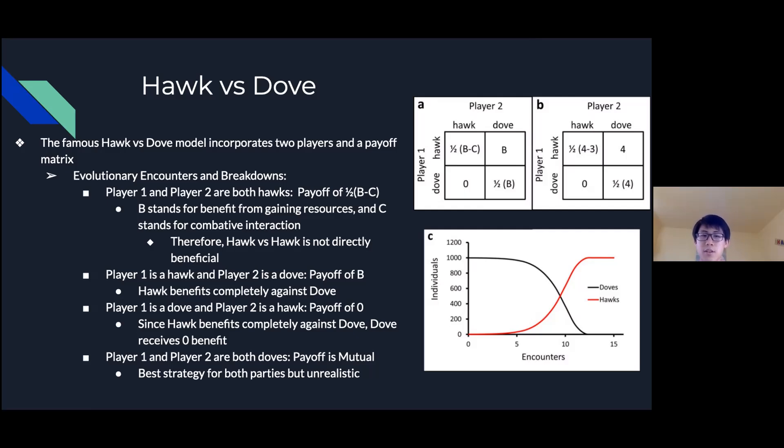The third scenario is player 1 as a dove and player 2 as a hawk which has a payoff of zero, which makes sense because a dove never wins against a hawk. Finally, player 1 and player 2 as both doves has a mutual payoff and it is the best strategy for both parties but it's unrealistic because as soon as there's for example one hawk, the hawk will take over the dove.